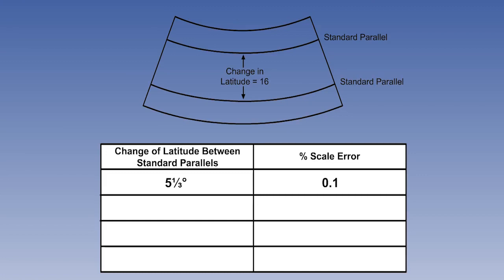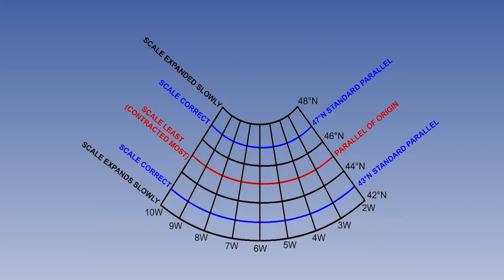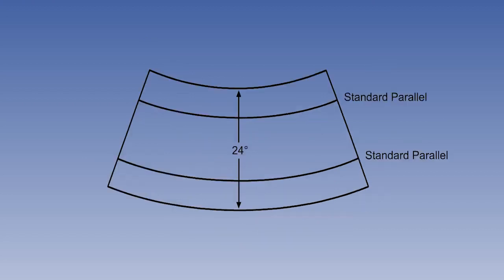So, if we now look at a chart with 16 degrees between the two standard parallels, the worst-case scale expansion or contraction increases to 1%, the limit of what we would call constant scale. Remembering our 1/6th rule again, if we have 16 degrees between the standard parallels, how many degrees are there between the top and bottom edges of the chart?